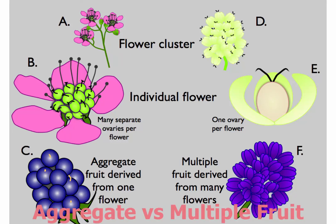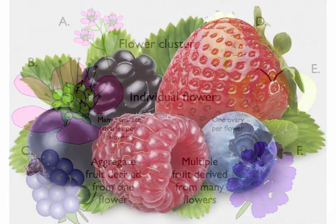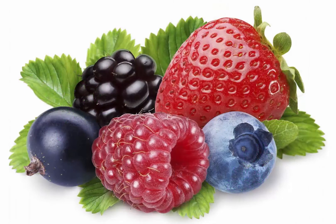Some other categories of fruits are based on how the structures of origin lump together. An aggregate fruit is derived from a single flower with several to many pistils. The individual pistils develop into tiny fruitlets, but as they mature, they cluster as a unit on a singular receptacle. Examples include raspberries, blackberries, and strawberries.